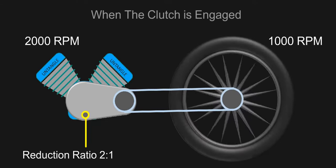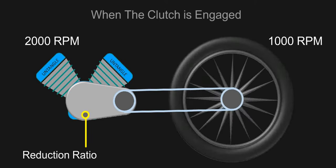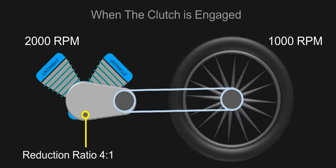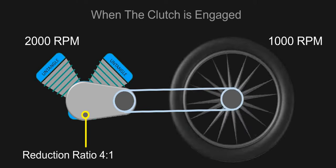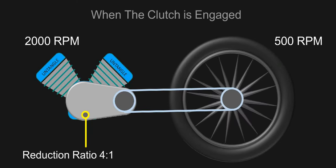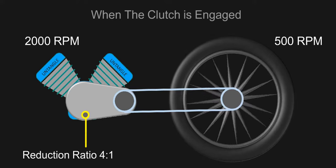Consider the gearbox ratio due to downshift is now 4 to 1. Now the 2000 RPM running engine wants the wheel to suddenly change its revolving speed to 500 RPM due to the ratio of gearbox.